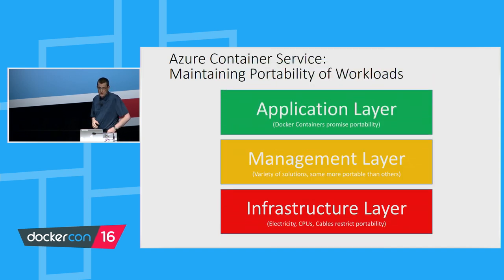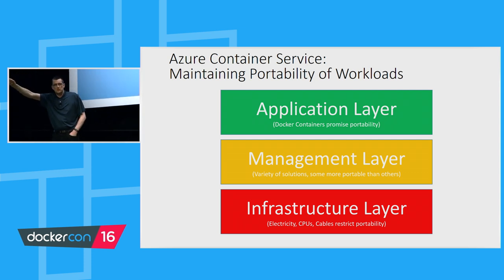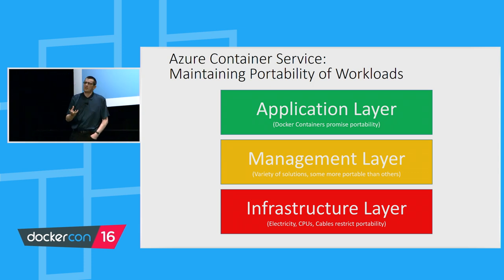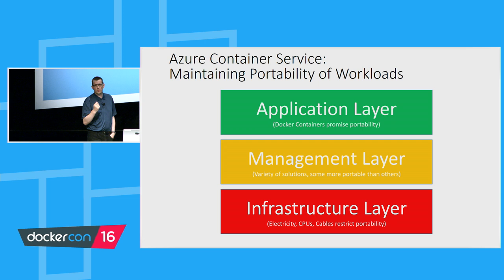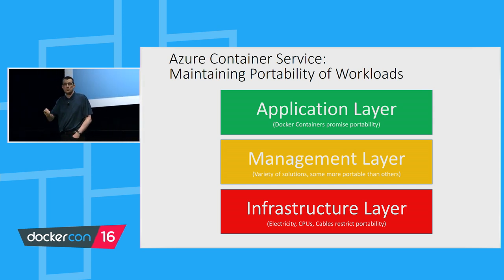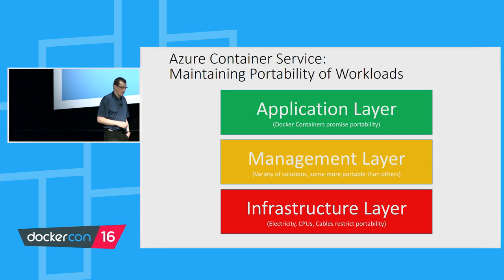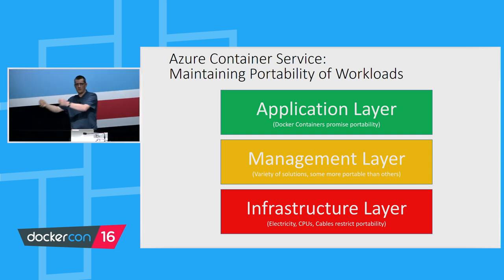In terms of where the portability is: at the application layer, you've got all the portability promise that Docker gives you — because we're using those standard APIs, nothing changes. At the orchestration layer it's not quite as simple; there are different choices of orchestration, but we only use open source technologies there, so the choice you make minimizes the stickiness. If you want to use Docker Swarm — which many of you at DockerCon are interested in — that's one of the options. At the infrastructure layer, we can't pick up the data centers and give you those, so that's the point at which portability has limits.